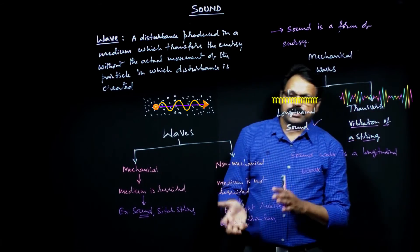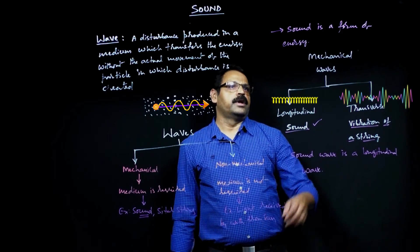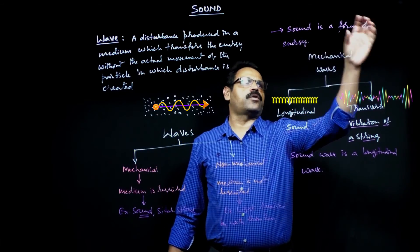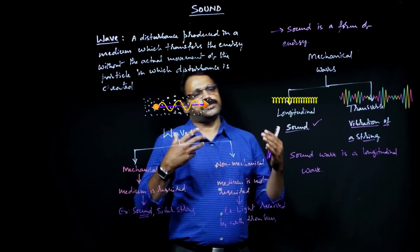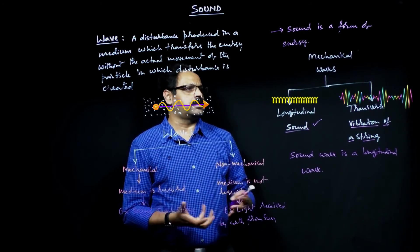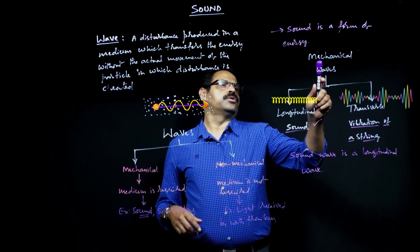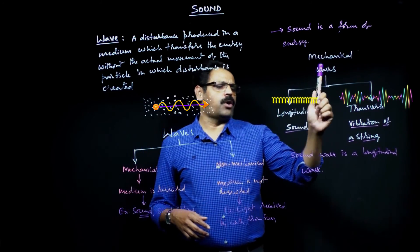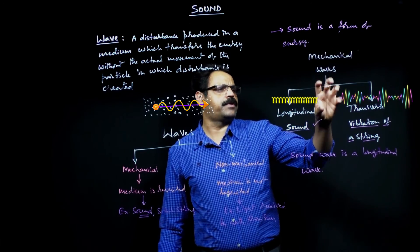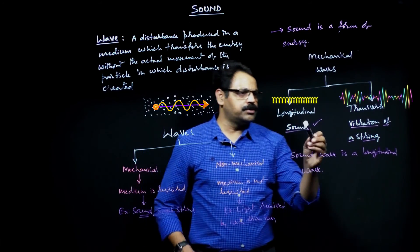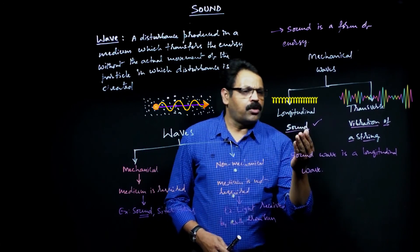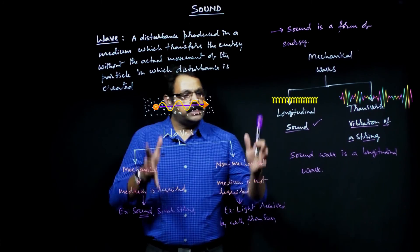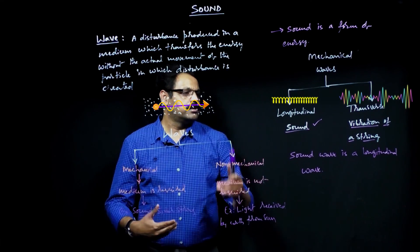Examples of mechanical waves are sound and vibration on a sitar string. Light coming from the Sun and reaching the Earth is a non-mechanical wave. Sound in particular is a form of energy produced by friction or other mechanical means, and it falls under mechanical waves — specifically as a longitudinal wave. Mechanical waves are classified into longitudinal and transverse types. The details of what longitudinal and transverse waves mean will be covered in the next video.